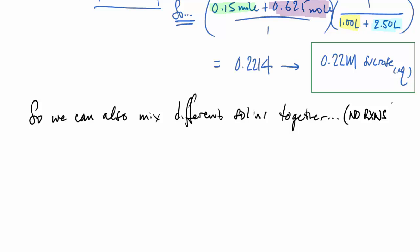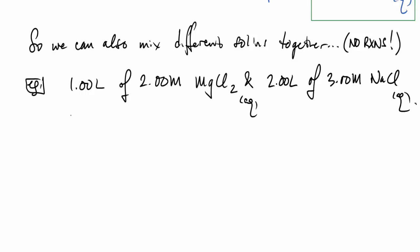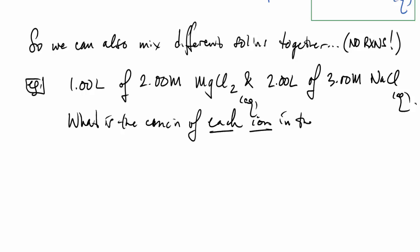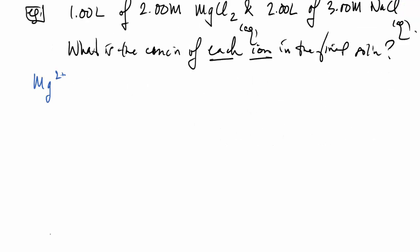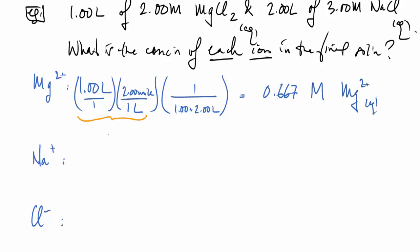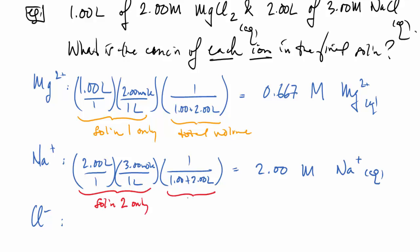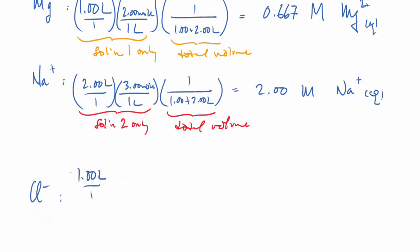We can also mix different solutions together. Let's mix 1 liter of 2 molar magnesium chloride with 2 liters of 3 molar sodium chloride — no reaction occurs, but we want the concentration of each ion in the final solution. For Mg²⁺: 1 L × 2 mol/L ÷ 3 L total = 0.667 molar. For Na⁺: 2 L × 3 mol/L ÷ 3 L total = 2 molar.